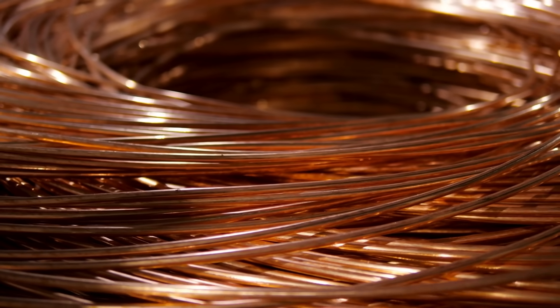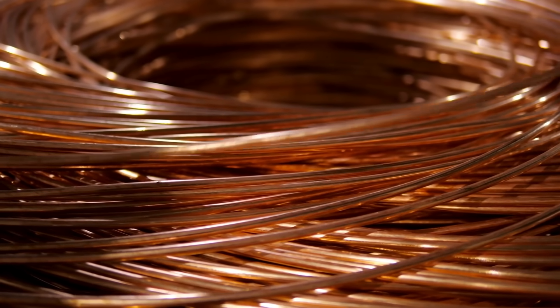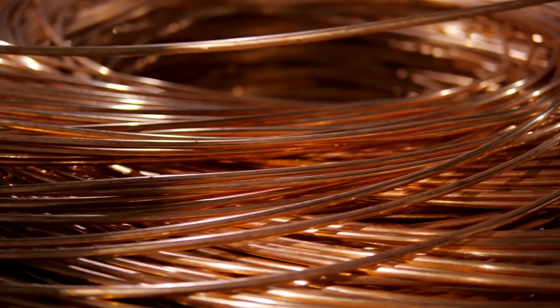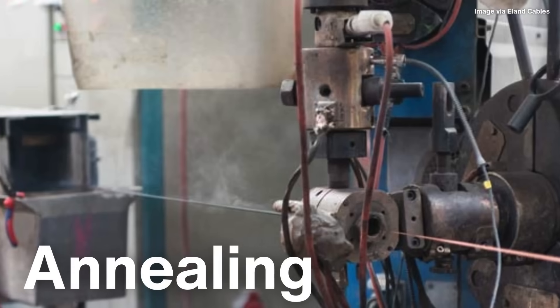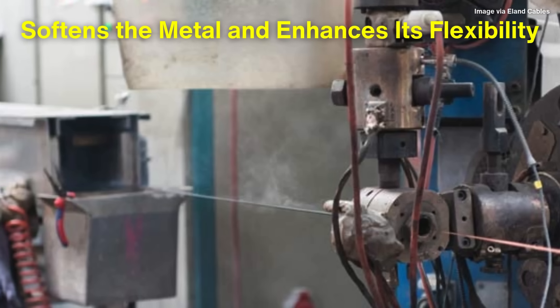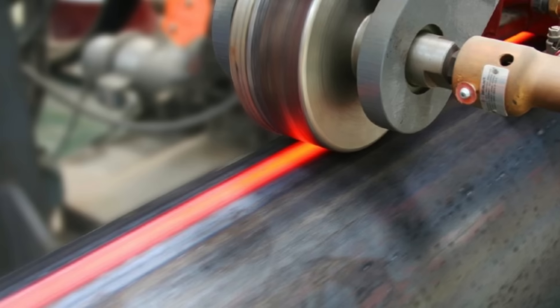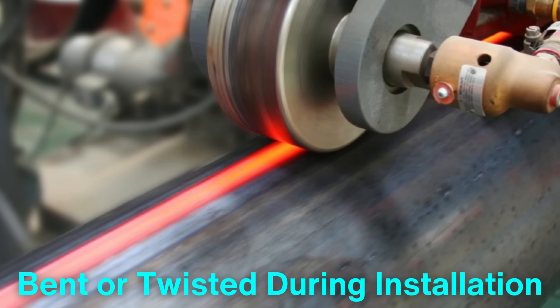Depending on the application, the final diameter of the wire can range from a few millimeters to less than a millimeter for fine wires used in electronics. After drawing, the wire may undergo annealing, a heat treatment process that softens the metal and enhances its flexibility. This step is crucial, especially for wires that need to be bent or twisted during installation.